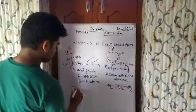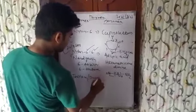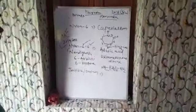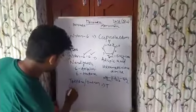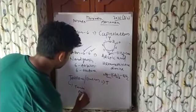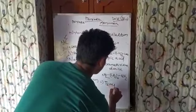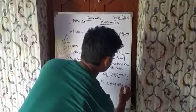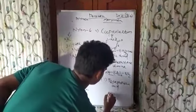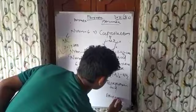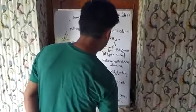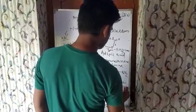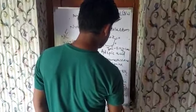Next is Terylene or Dacron. Terylene or Dacron is a polymer. What are the monomers? Terephthalic acid and ethylene glycol. Ethylene glycol: CH2-CH2-OH-OH.